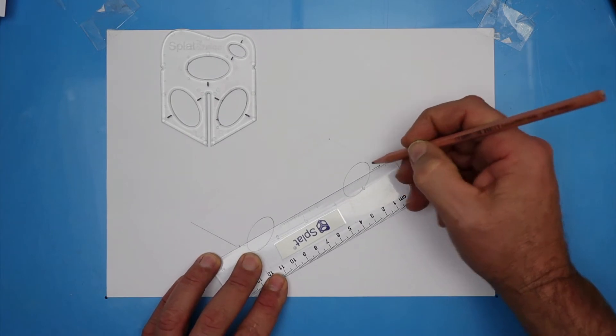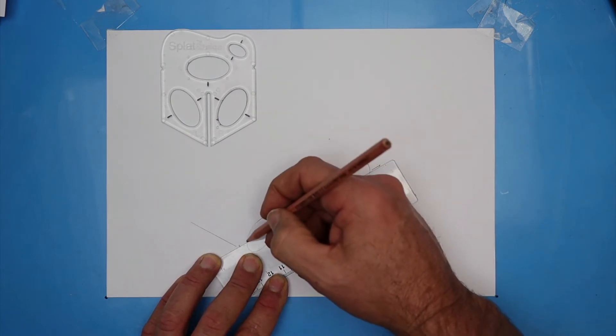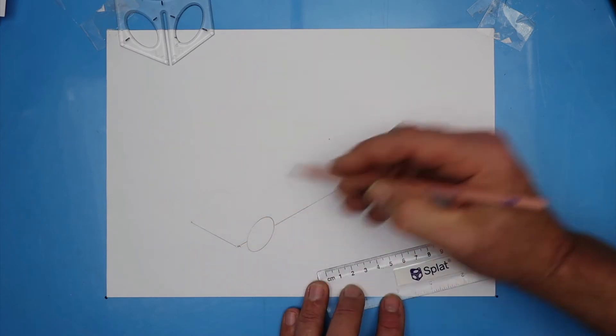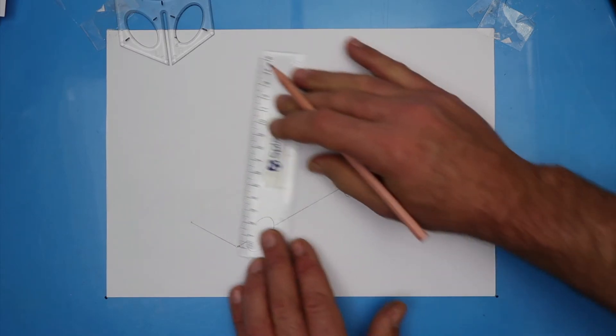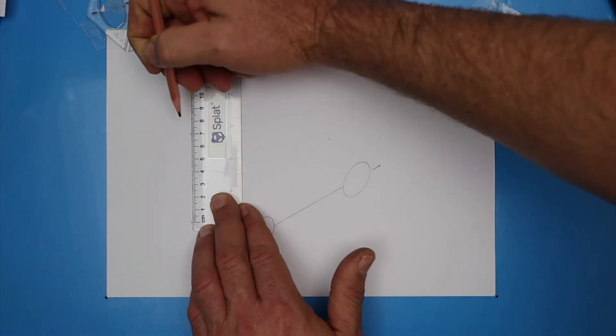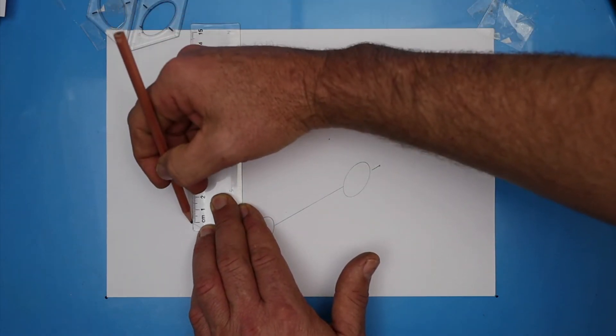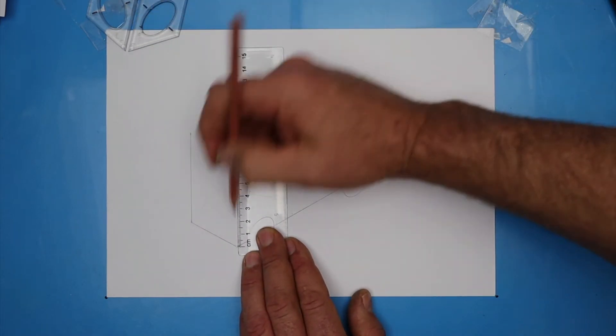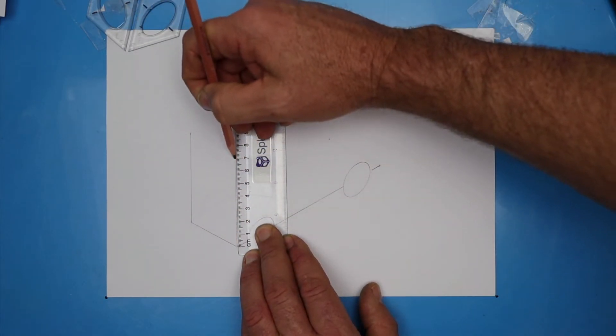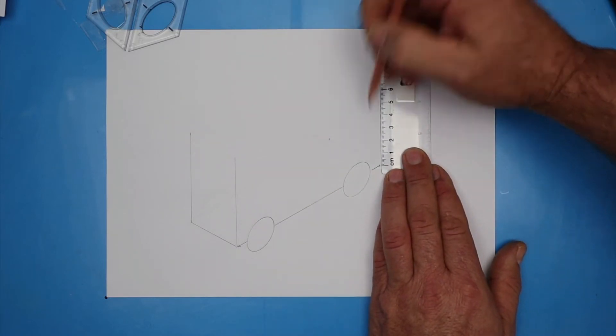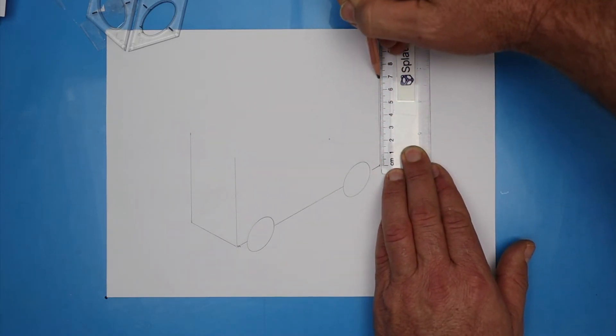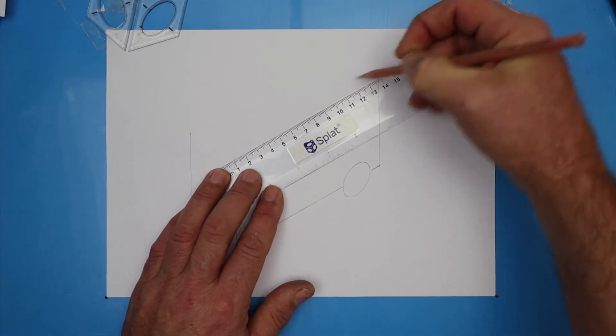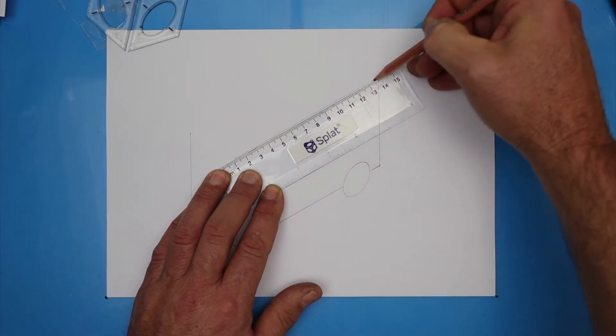So when you've traced as much as you can see there I'm going to show you three corners. One, two, three. And we're going to draw a line straight up and it'll be seven centimeters long. And then from the second point we'll do the same and then down to the back.